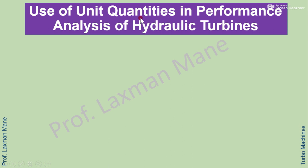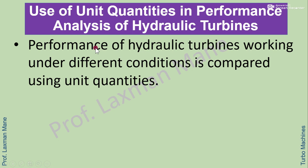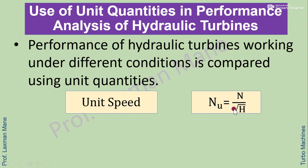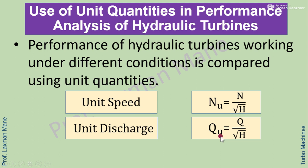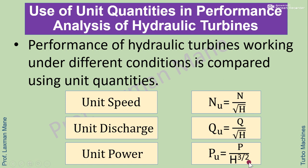We need unit quantities in performance analysis of hydraulic turbines. Performance of hydraulic turbines working under different conditions is compared using unit quantities. There are three types: unit speed Nu = N / √H, unit discharge Qu = Q / √H, and unit power Pu = P / H^(3/2).